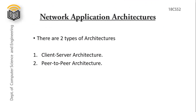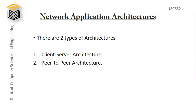Network Application Architectures: There are two types of architecture — client-server architecture and peer-to-peer architecture. The application developer can choose any of these architectures for developing an application.